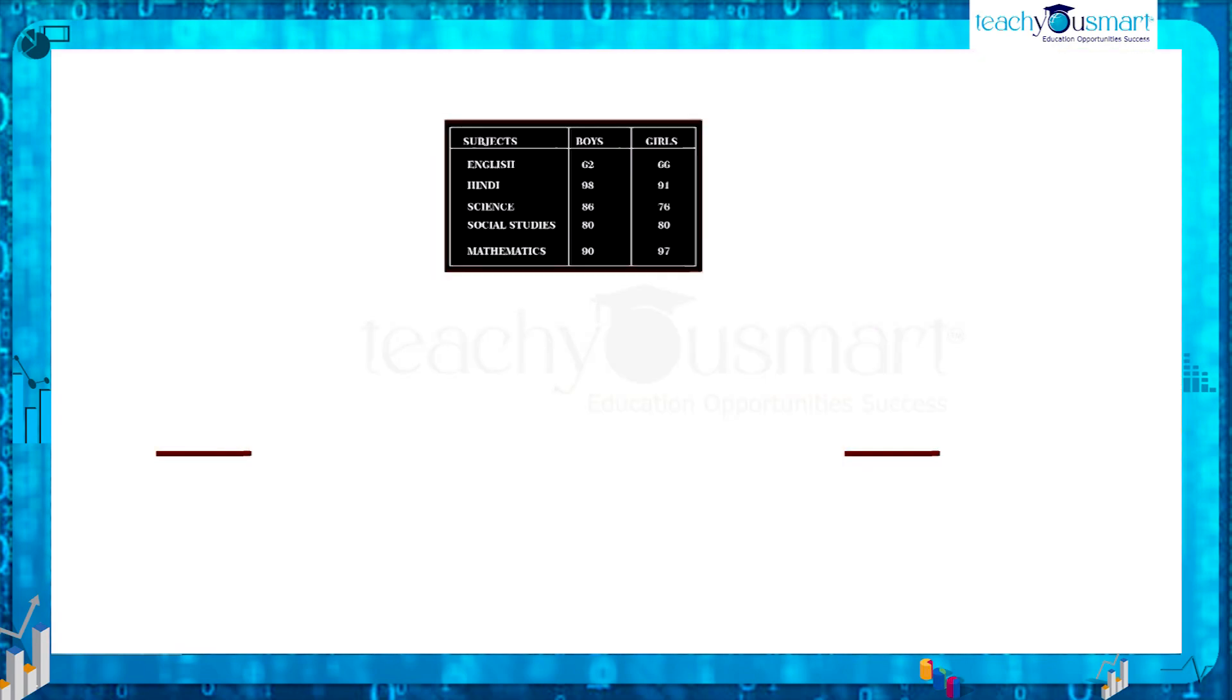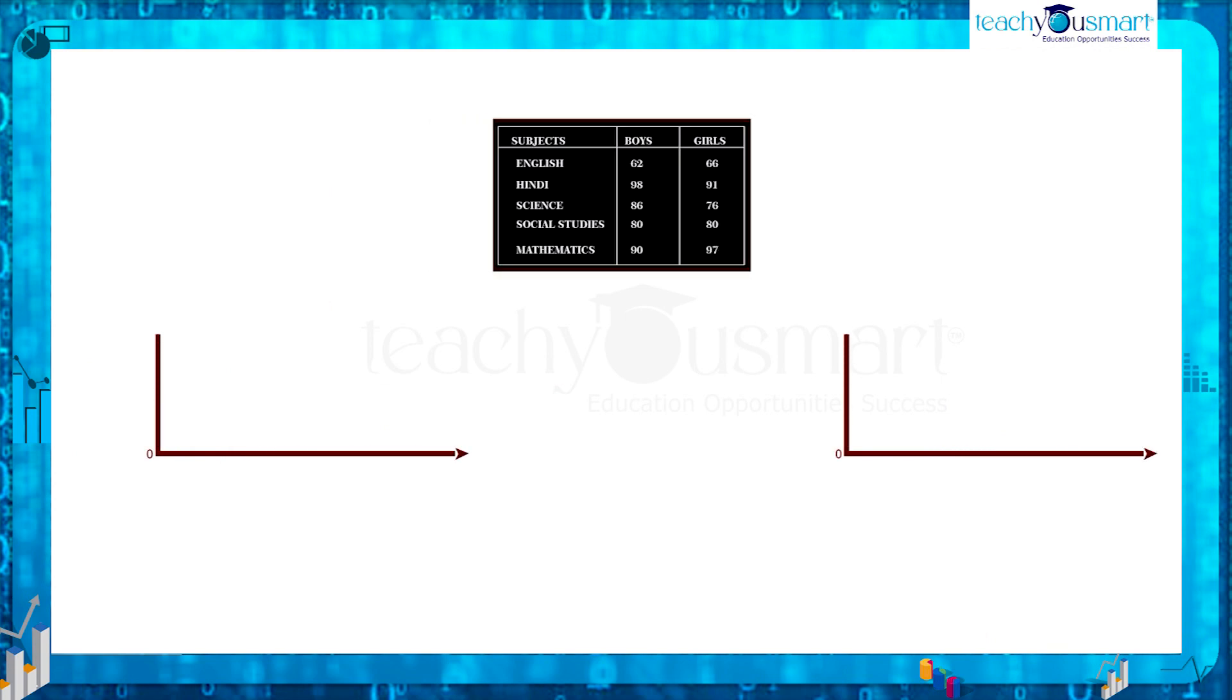If we represent this in bar graph we get two bar graphs for both columns. The first graph is for the average mark of boys in various subjects. The second graph is for the average mark of girls in multiple subjects.